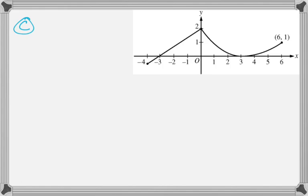Is there a value a between negative 4 and 6 for which the mean value theorem applied to the interval from a to 6 guarantees a value of c where a is less than c is less than 6, at which f prime of c equals 1 3rd? Justify your answer. This is very much a mean value type of thing.